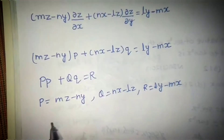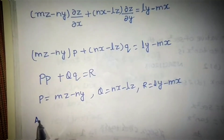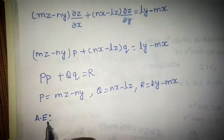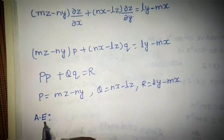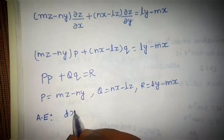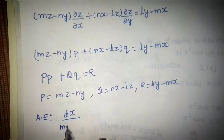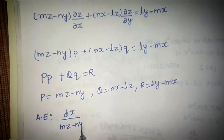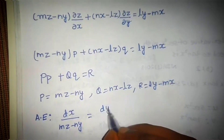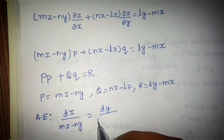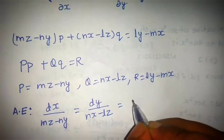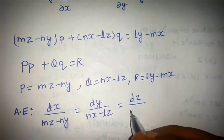What is the auxiliary equation which we write while solving by Lagrange's method? You can call it the subsidiary equation as well. That is: dx divided by P (which is mz minus ny), equals dy divided by Q, and this is further equal to dz divided by R.